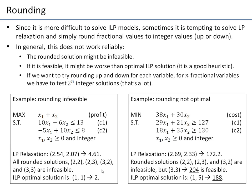In this second example, solving the LP relaxation gives x1=2.69 and x2=2.33, with a value of 172.2. If you try rounding, three of the rounded solutions are not feasible. But rounding both variables up — (3, 3) — is feasible, because these constraints have positive coefficients with a greater-than-or-equal sign, so rounding up works.